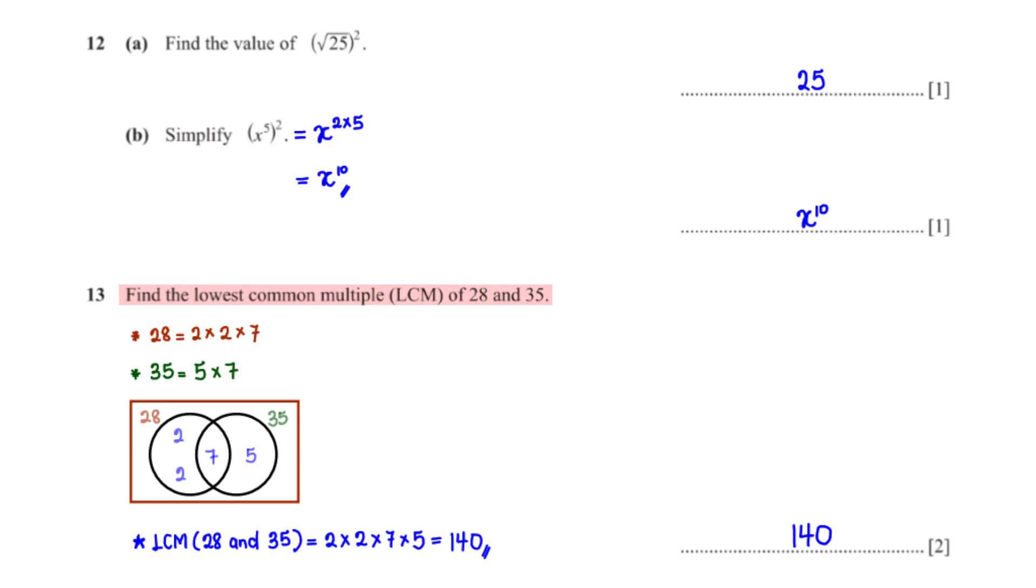Find the lowest common multiple of 28 and 35. First, we write 28 and 35 as a product of their prime factors. Then we map their prime factors onto a Venn diagram. The product of the elements in the Venn diagram gives us the LCM. So we have 2 times 2 times 7 times 5, which is equal to 140.